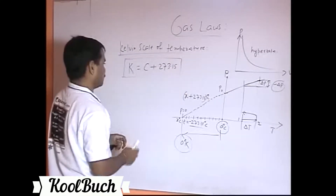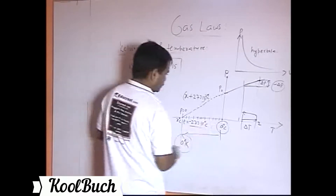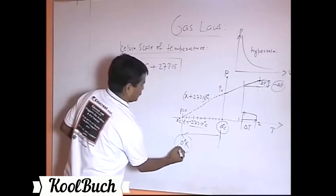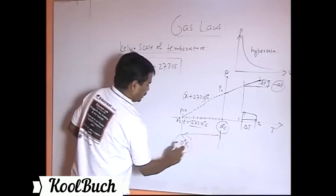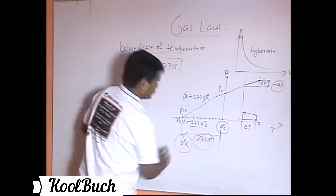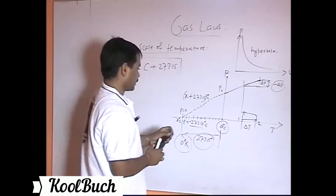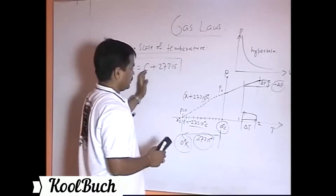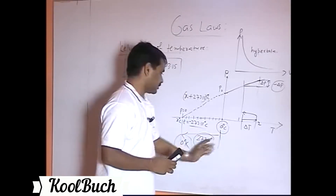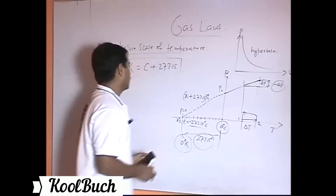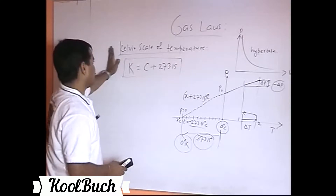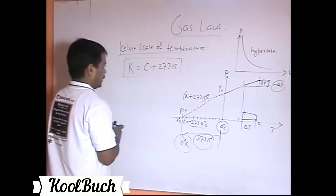This is clear from the starting points: zero degrees centigrade is the starting point of the centigrade scale, while the starting point of the Kelvin scale is absolute zero. The difference between them is 273.15. So when the centigrade scale reads zero, the Kelvin scale reads 273.15 Kelvin. That's how the Kelvin temperature scale is defined.